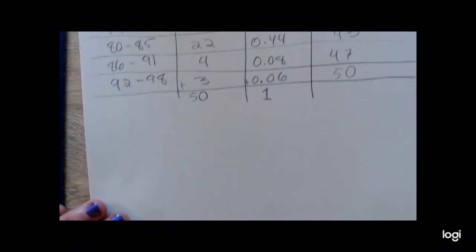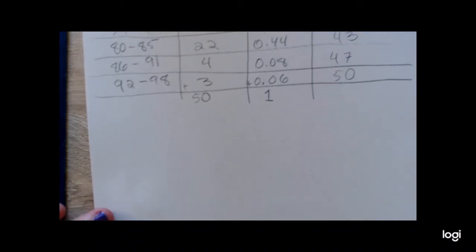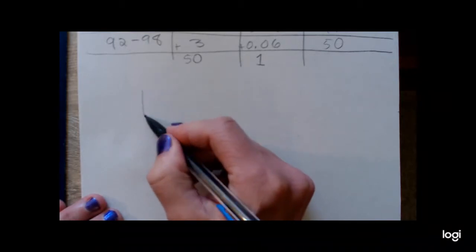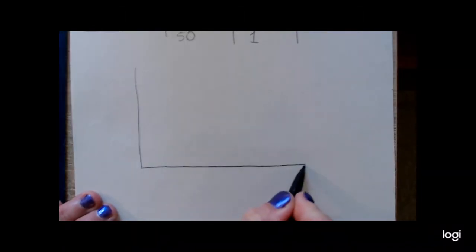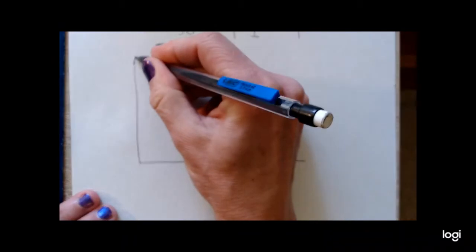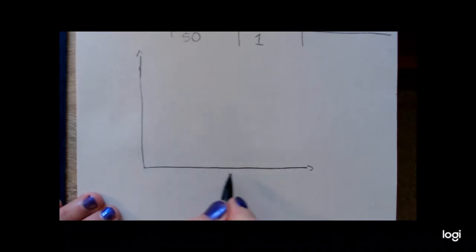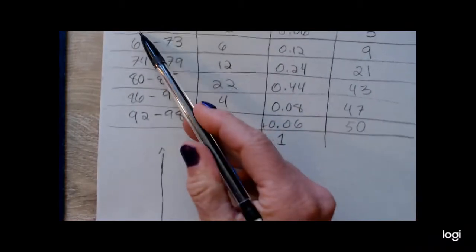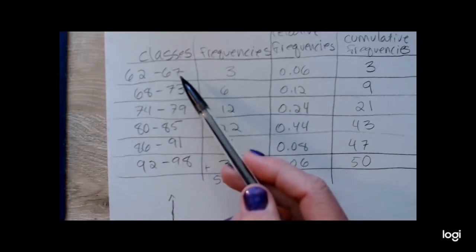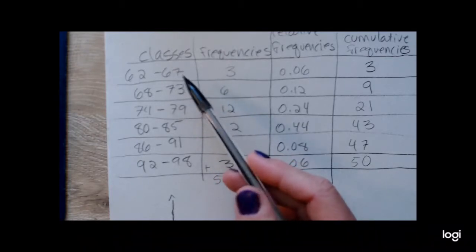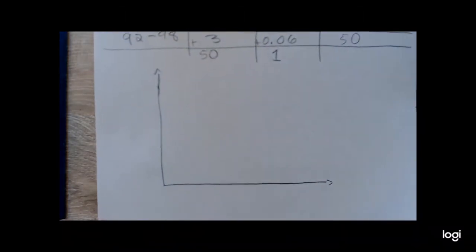Okay, so I'm going to go ahead and draw an xy plane or a pseudo xy plane as neatly as I possibly can. And for the horizontal axis, I'm going to be subtracting 0.5 from the first class and adding 0.5 to the upper class limit to the first class. Sorry, getting a little tongue-tied.